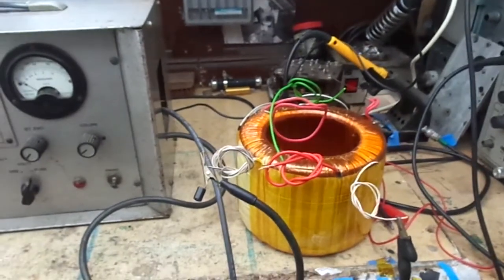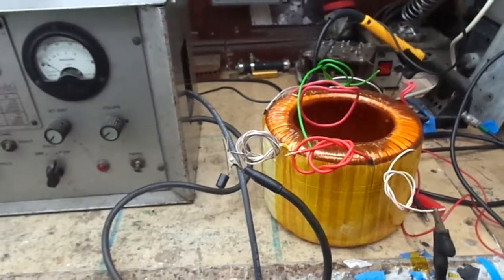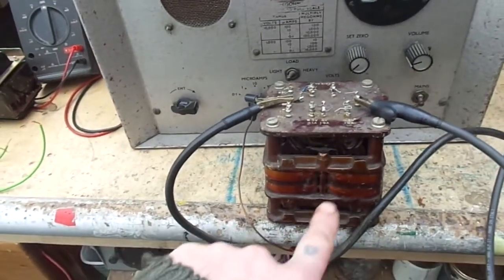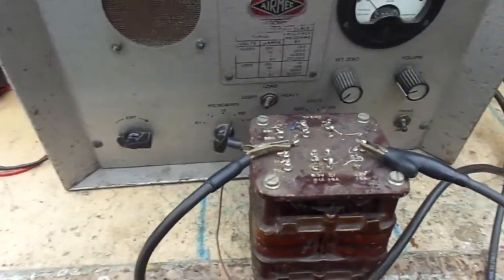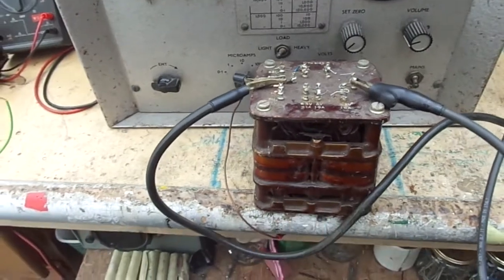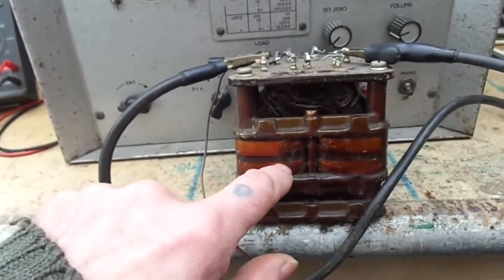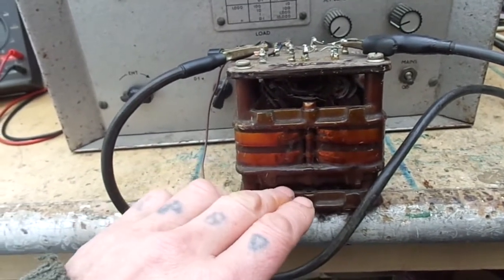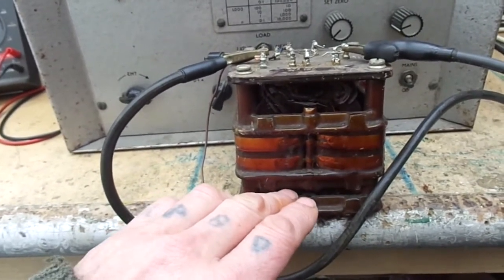So I'd be quite happy to run this at 2kV easy. Just for the crack, I'm just testing this old C-core transformer. I think it's probably a Partridge or Parmeko, something like that. Now then, this transformer here was the top of the range sort of transformer you would get at the time, like the 1950s, 60s maybe.